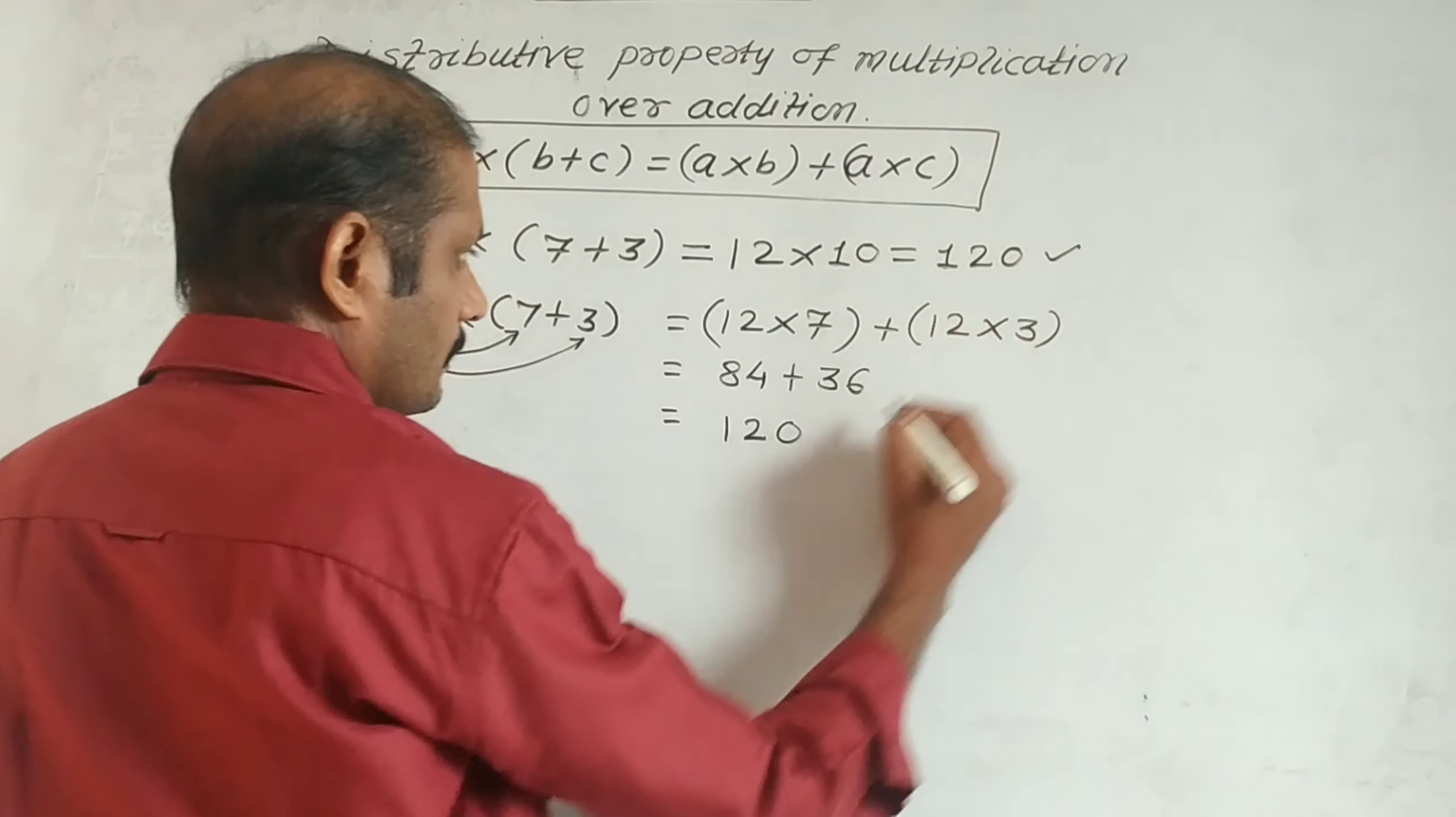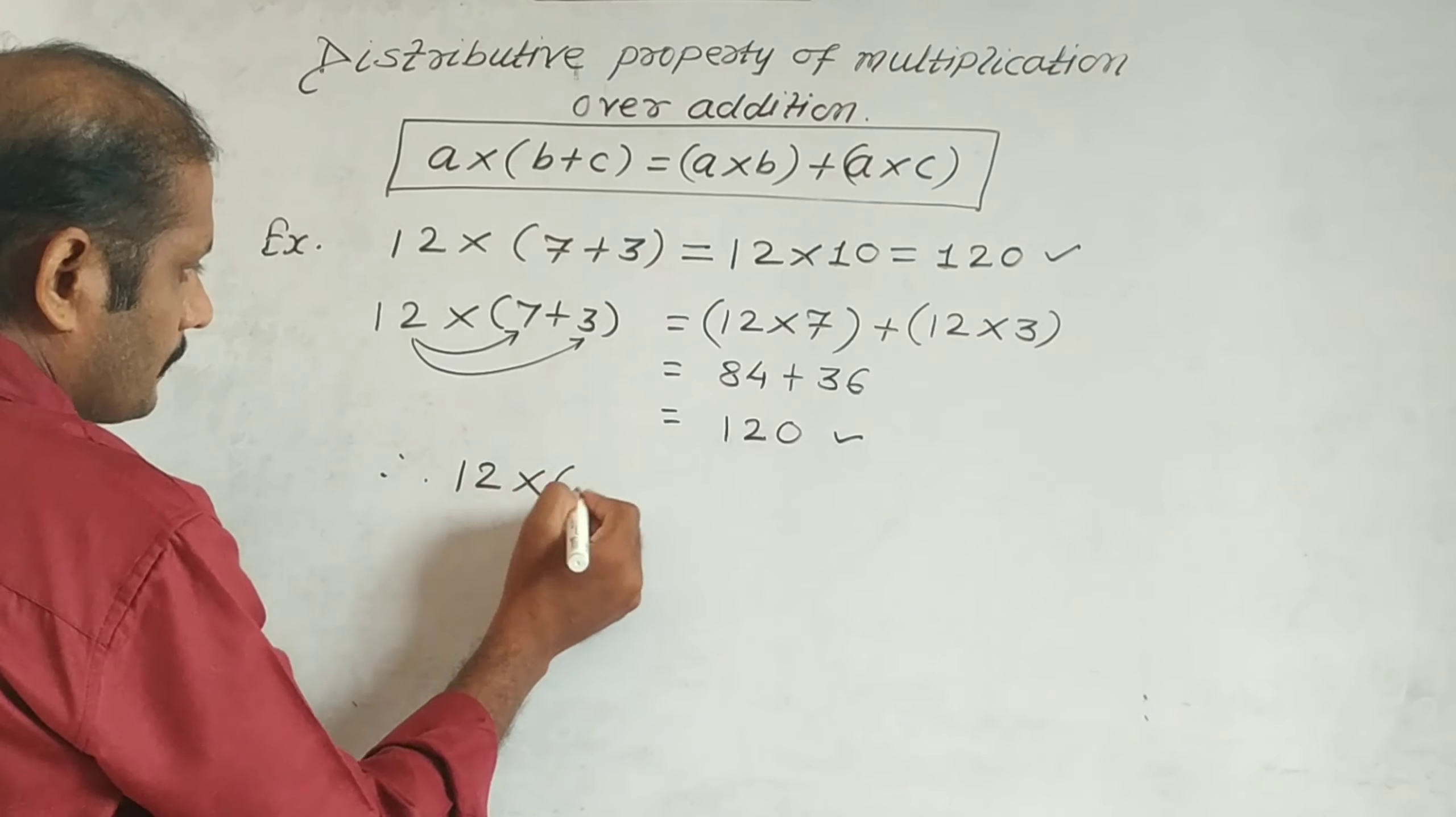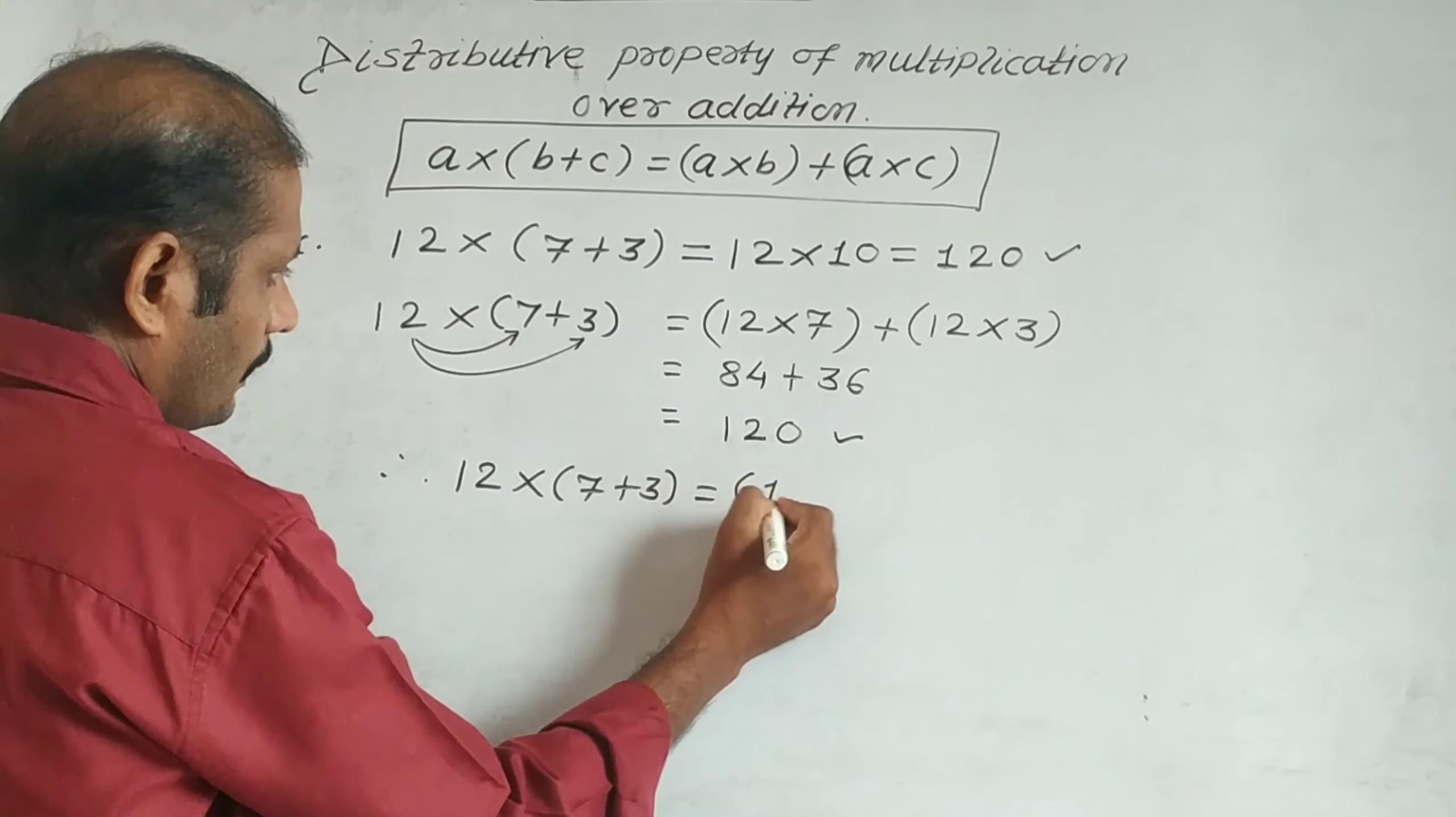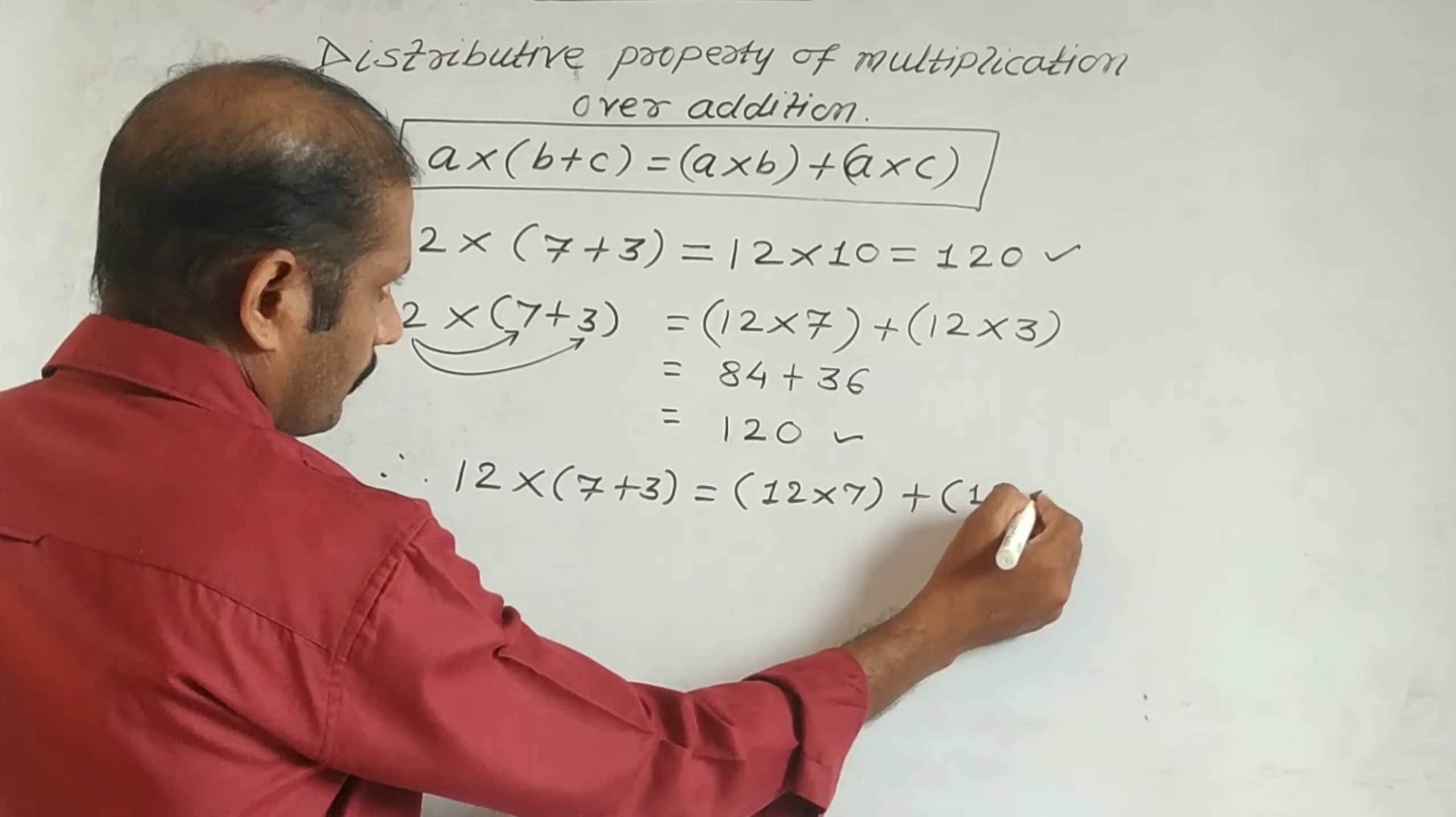See, both answers are the same. Therefore, we can say that 12 × (7 + 3) = (12 × 7) + (12 × 3). Now, this is how we use it and we can look at some examples.